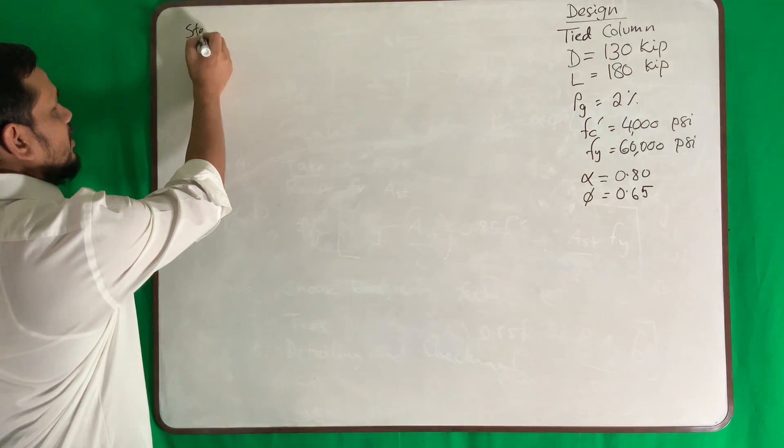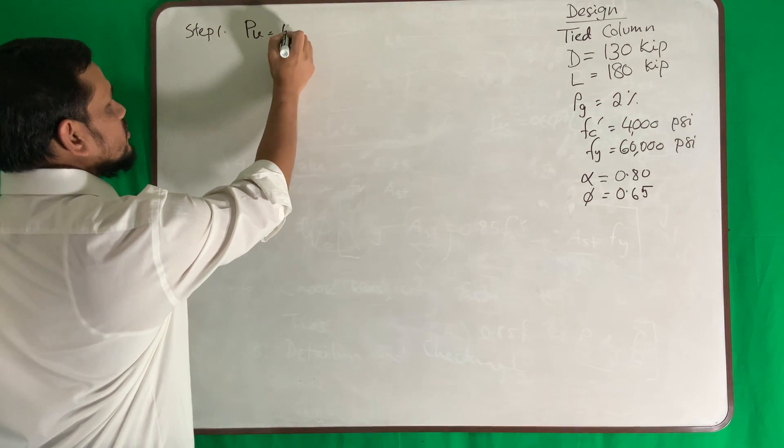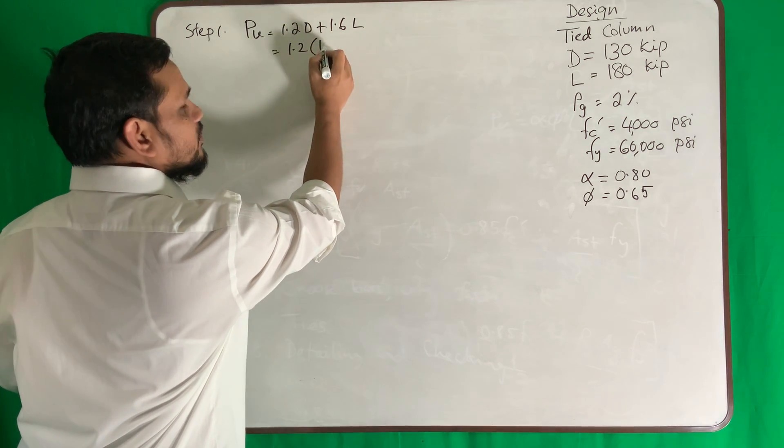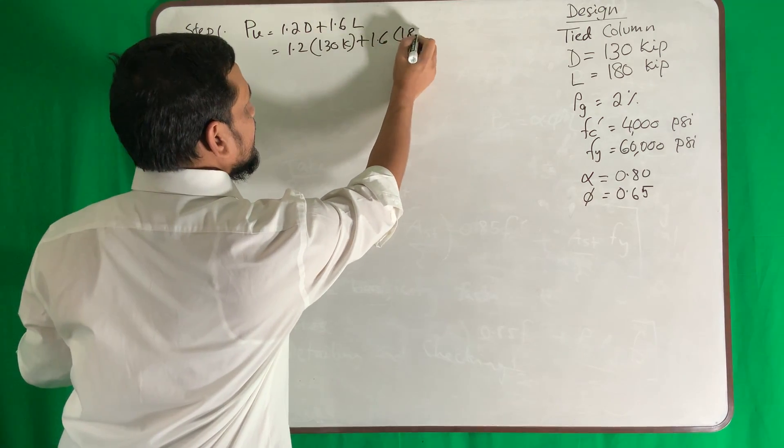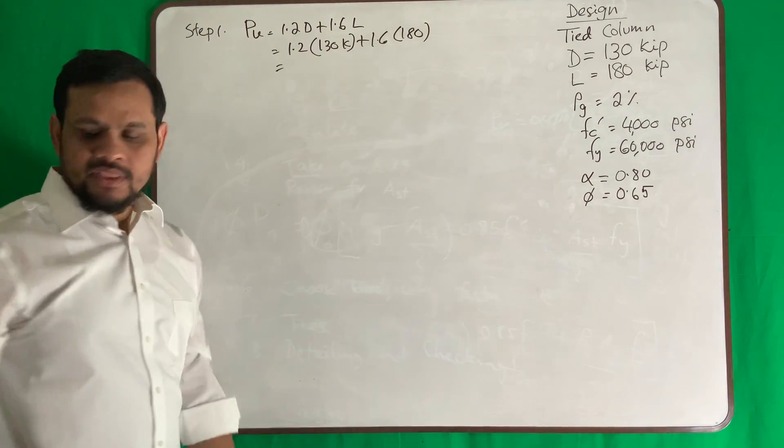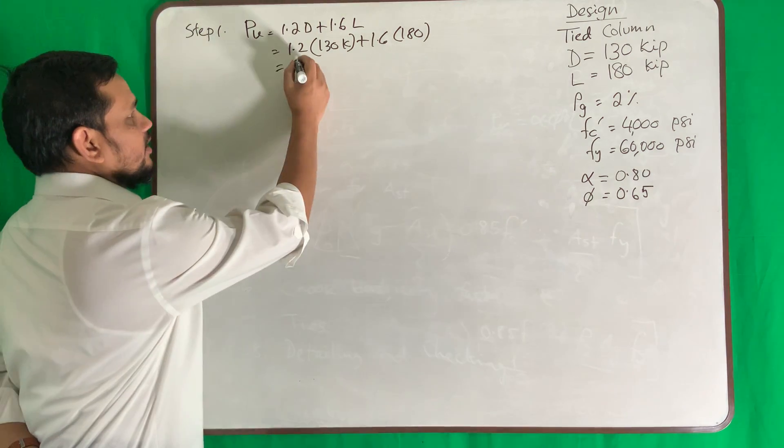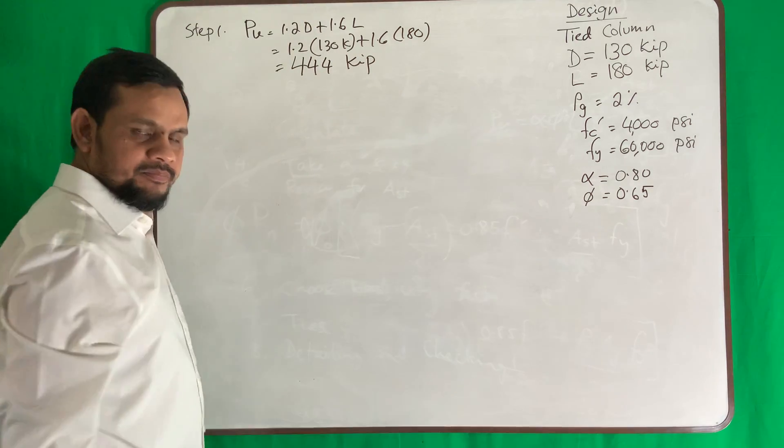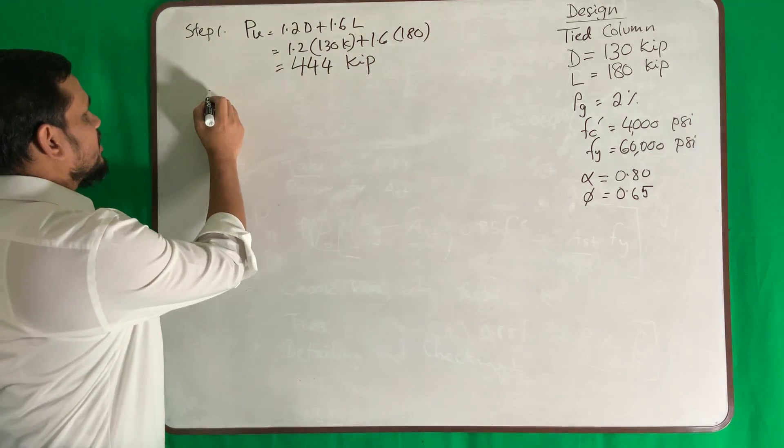So what are my steps? Step number one, calculate load: Pu = 1.2D + 1.6L, so 1.2 times 130 kip plus 1.6 times 180. I am solving this problem from your book so that I can do quickly.